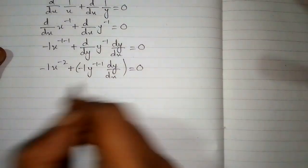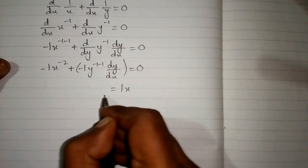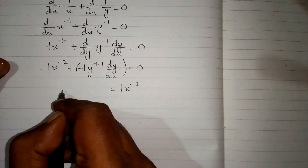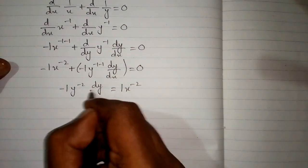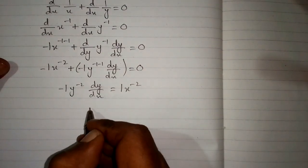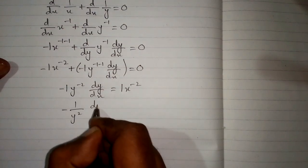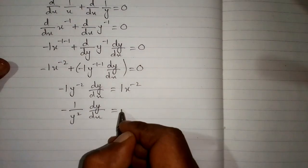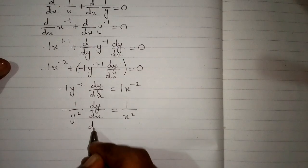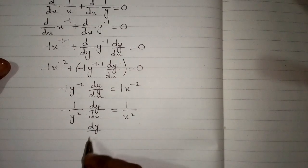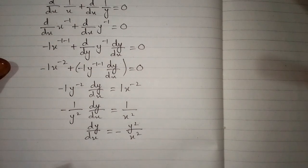Now we take the x term to the other side of the equation, giving 1/x squared equals minus 1 times y to the power minus 2 multiplied by dy/dx. This can be written as minus 1 upon y squared, multiplied by dy/dx, equals 1 upon x squared. Multiplying both sides by minus y squared, we get dy/dx is equal to minus y squared upon x squared.